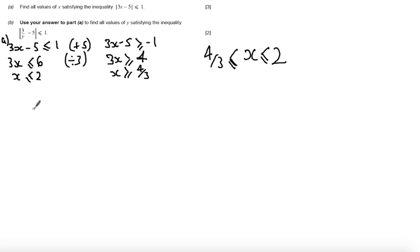Part B says use the answer in part A to find values of y satisfy the inequality of modulus of 3 over y minus 5 less than or equal to 1. Okay, so if we consider this as 3 times 1 over y minus 5 less than or equal to 1, then what we have here is that x is in fact equal to 1 over y.